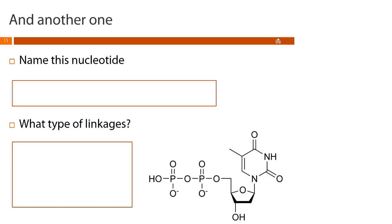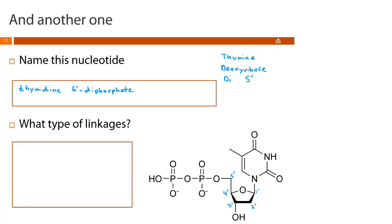In another example, we have a thymine base again with a deoxyribose sugar, but this time two phosphate groups with one attached at the five-prime position. Since thymine only exists in DNA, the nucleoside is thymidine. With two phosphates at the five-prime position, this molecule is thymidine 5'-diphosphate, or deoxythymidine 5'-diphosphate.